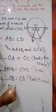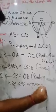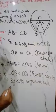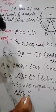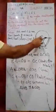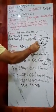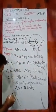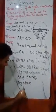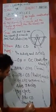Therefore, by the Side-Angle-Side (SAS) congruence rule, triangle AOB is congruent to triangle COD. Since the two triangles are congruent, by CPCT — corresponding parts of congruent triangles — AB is equal to CD. Hence proved.